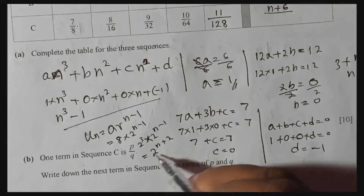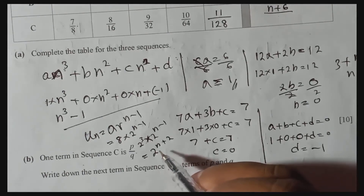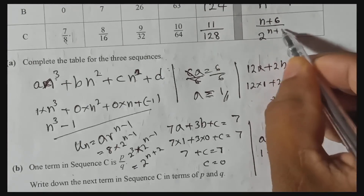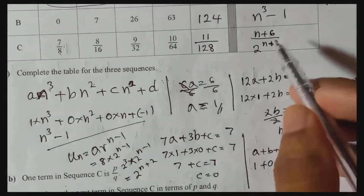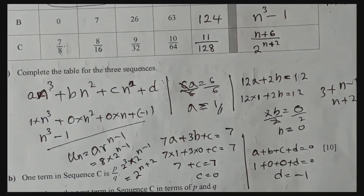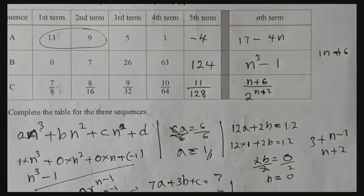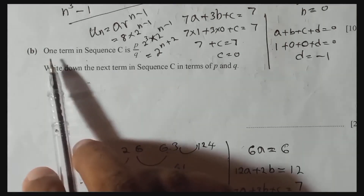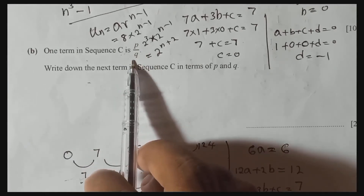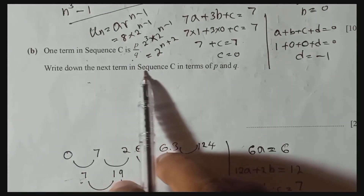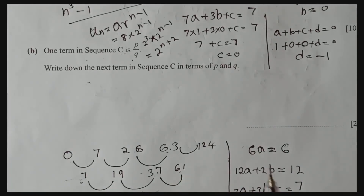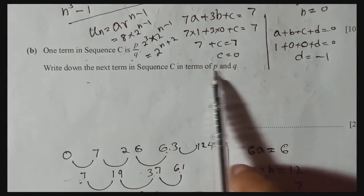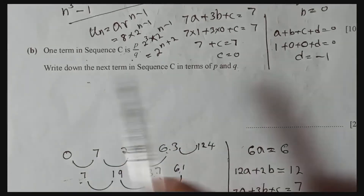So we can write the nth term for the denominator of sequence C as 2^(n+2). That gives the nth term for sequence C. Now we need to fill in the table, and move to the next part of the question.